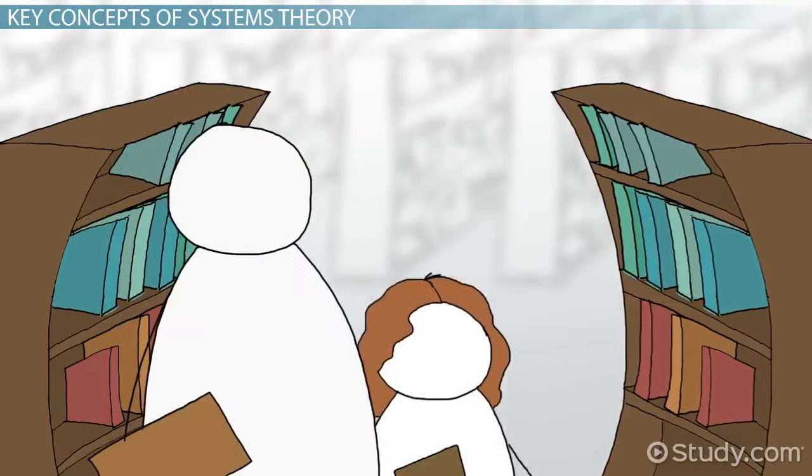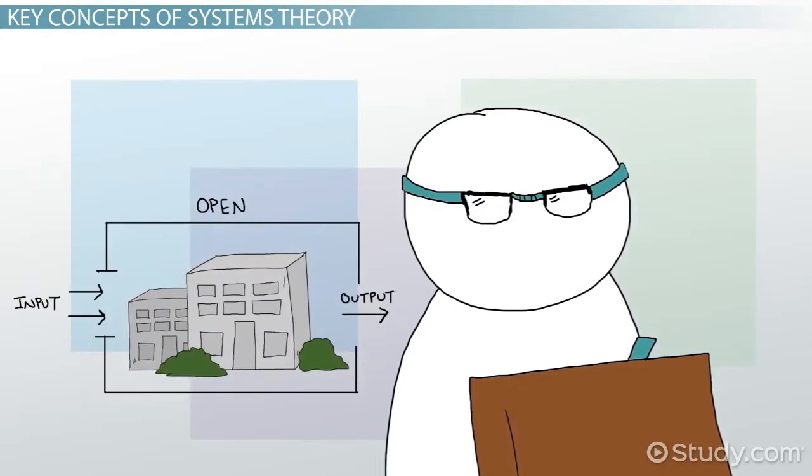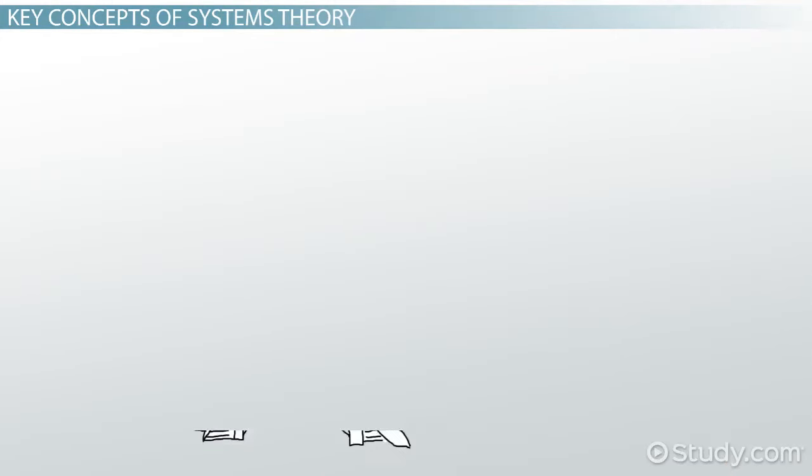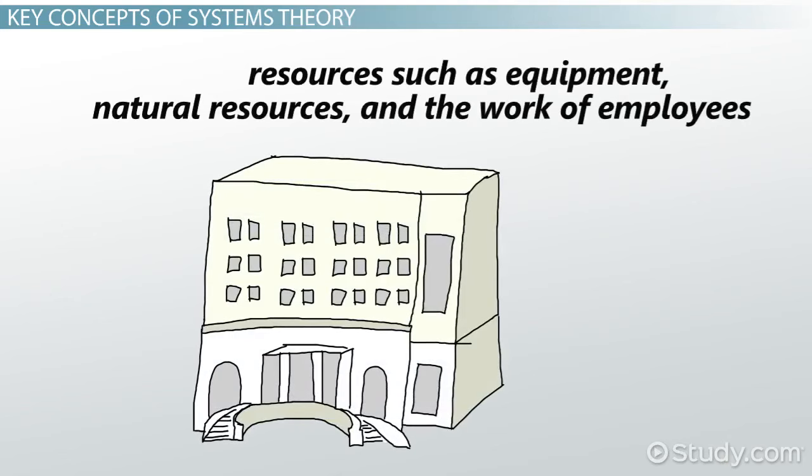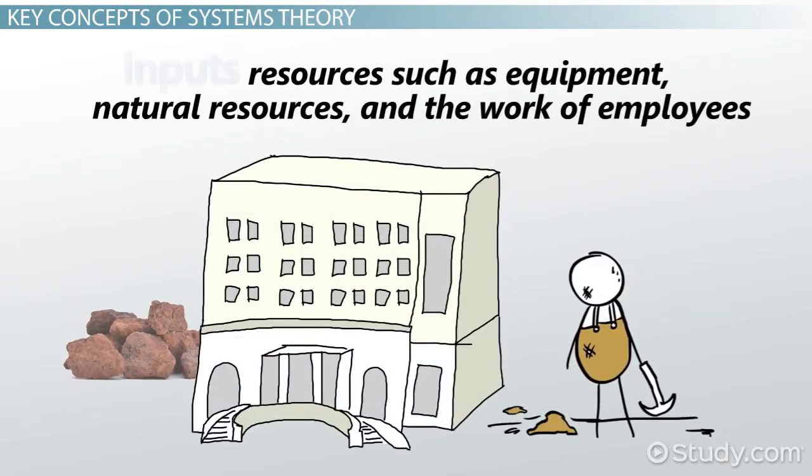Most theorists treat an organization as an open system. An open system consists of three essential elements. An organization receives resources, such as equipment, natural resources, and the work of employees, referred to as inputs.